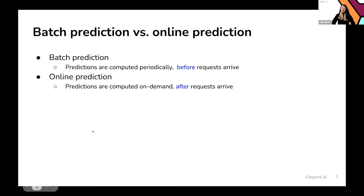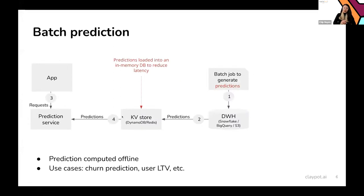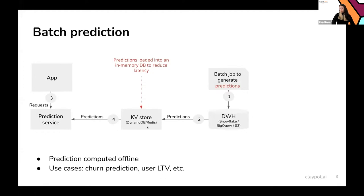With online predictions, the big challenge is latency, because predictions are computed after requests arrive — you need a model that can return predictions very fast because users don't like waiting. For batch predictions, the workflow is: generate predictions offline in batch, load them into a key-value store like DynamoDB or Redis to reduce latency at prediction time, and then fetch them when requests arrive.